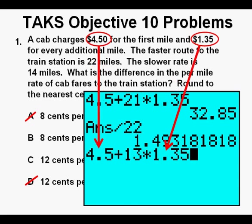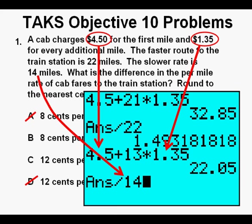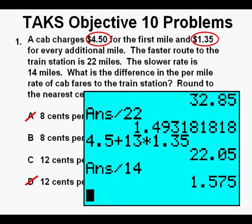And to compute the slower route, we take 4.5 for the first mile plus 13 times 1.35 for the remaining miles. Press Enter. The total cost of the slower route is $22.05. To get the average cost per mile, we divide by 14. Press Enter. We get $1.57 and a half cents per mile.